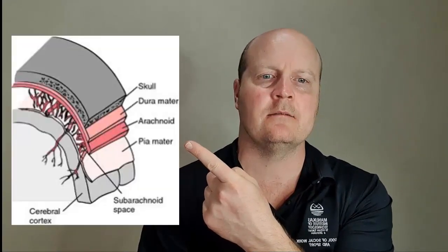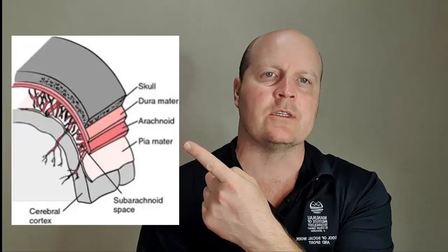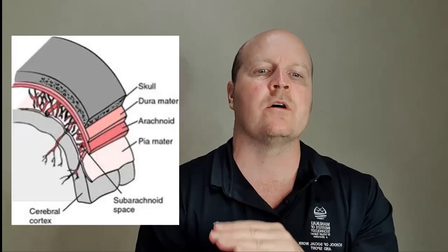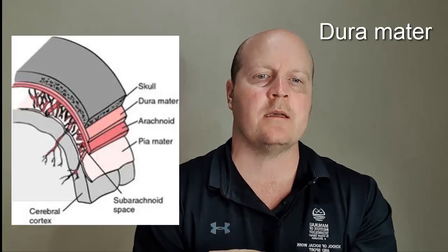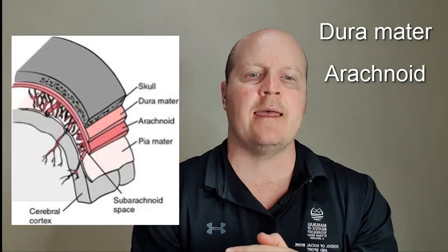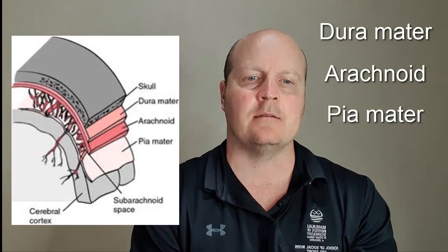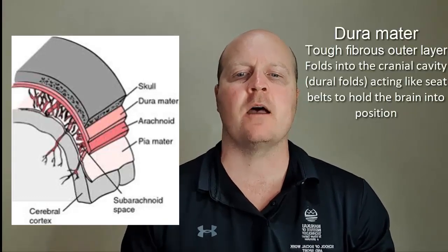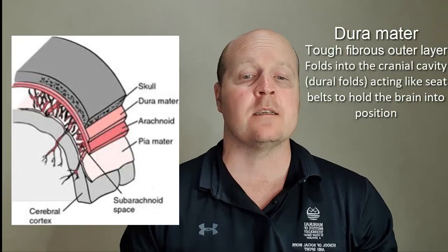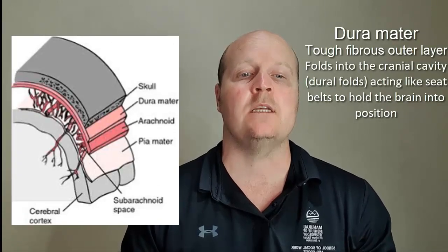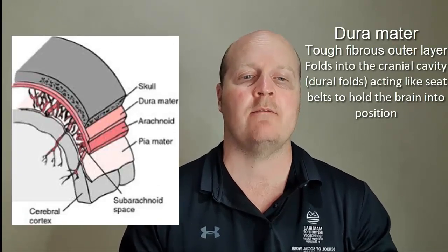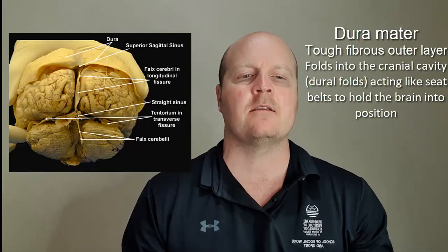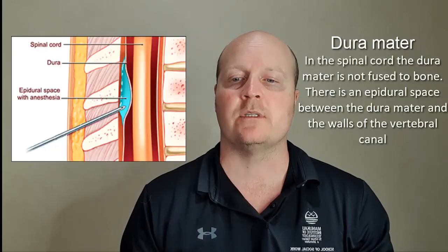If we have a look here, you can see on the outside we've got the hard skull, and then we've got the dura mater, the arachnoid, and the pia mater. The dura mater is tough and fibrous and it's the outer layer. At some locations the dura mater folds into the cranial cavity — these are called dural folds, and they act like seat belts to hold the brain in position.